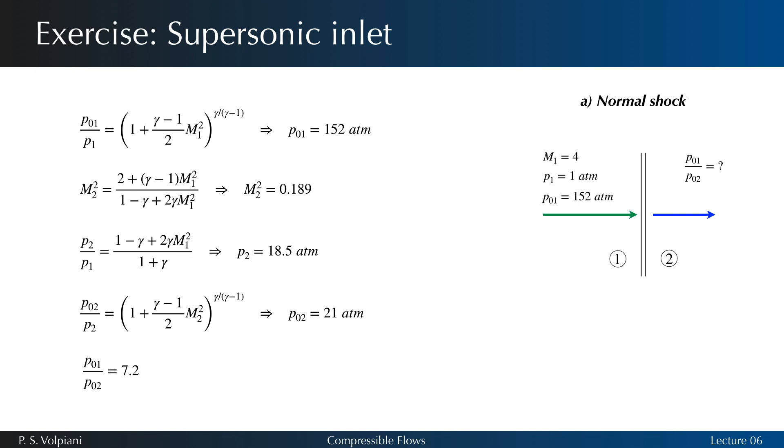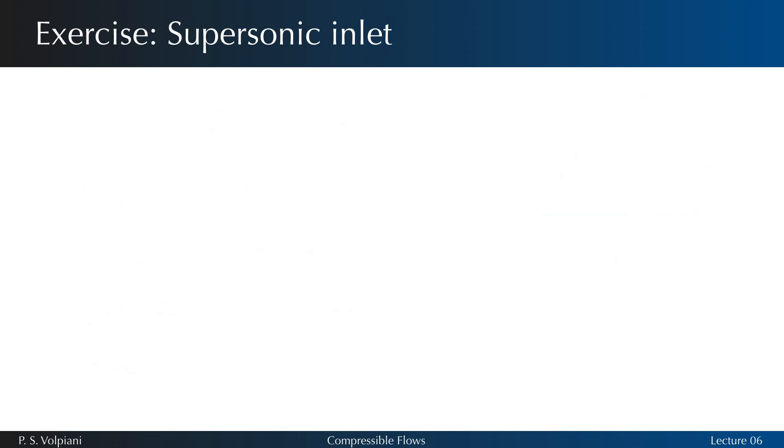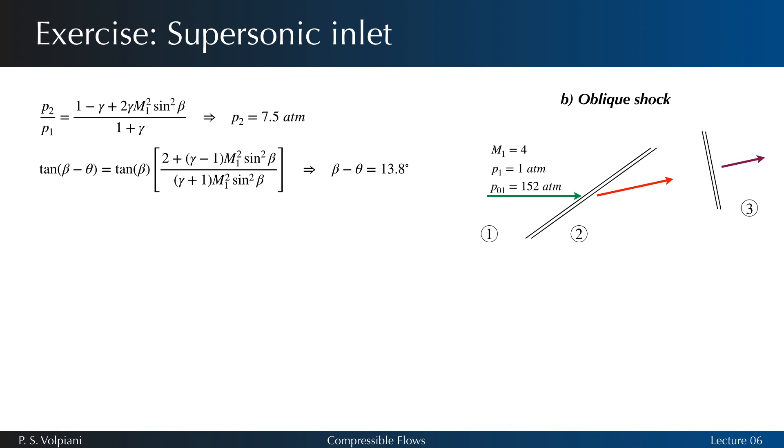Now let's do the analysis for the oblique shock. The state 2 behind the oblique shock is given by the following expression. We need to compute P2, the difference beta minus theta, in order to compute M2.